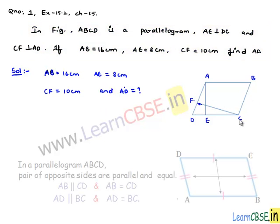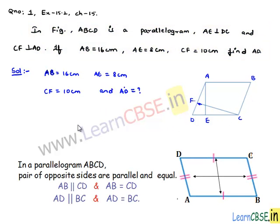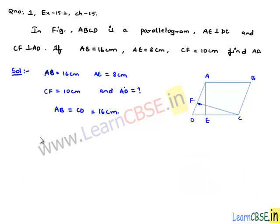As ABCD is a parallelogram we know that in any parallelogram the opposite sides will be equal and parallel. So, here AB will be equal to CD which is equal to 16 cm.